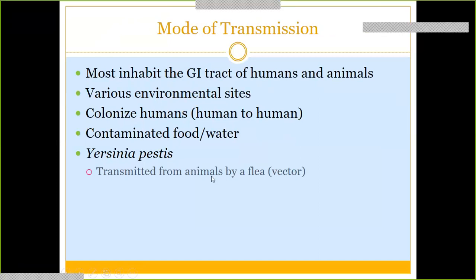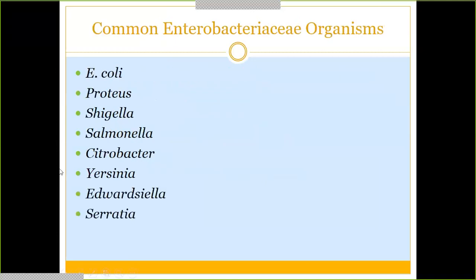For mode of transmission: the name Enterobacteriaceae — from medical terminology — means intestine. A lot of these organisms inhabit your intestinal tract and the intestinal tract of animals, and they're found throughout environments too. They can colonize humans and contaminate food, leading to food poisoning. One special note: Yersinia pestis is specifically transmitted by fleas as the vector, off of an animal.